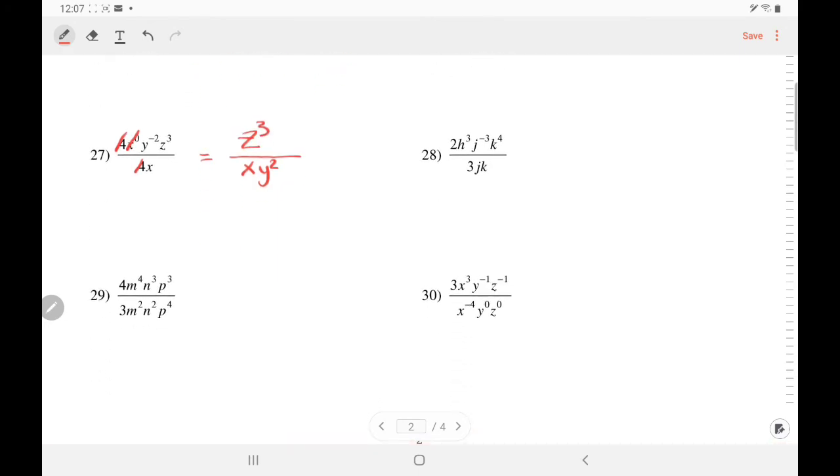Let's try number 29. The 4 and 3 do not reduce, so I'm just going to put them exactly where they are. I'm going to do it alphabetically. Let's work with the M's. M, and because this is a division, we subtract exponents: 4 minus 2 is 2.